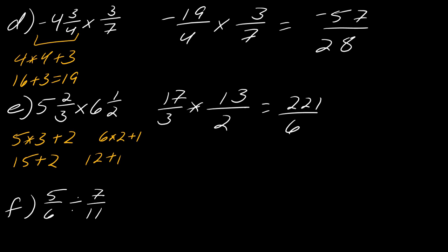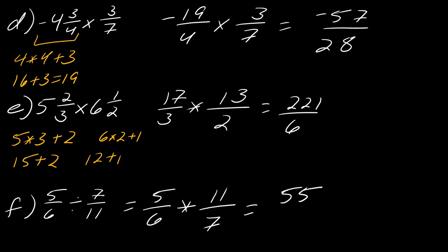Now we're pivoting to division. I have five over six divided by seven over eleven. I turn it into a multiplication problem by flipping the second fraction — multiplying by the reciprocal. Five times eleven is 55 and six times seven is 42, so the answer is 55 over 42.